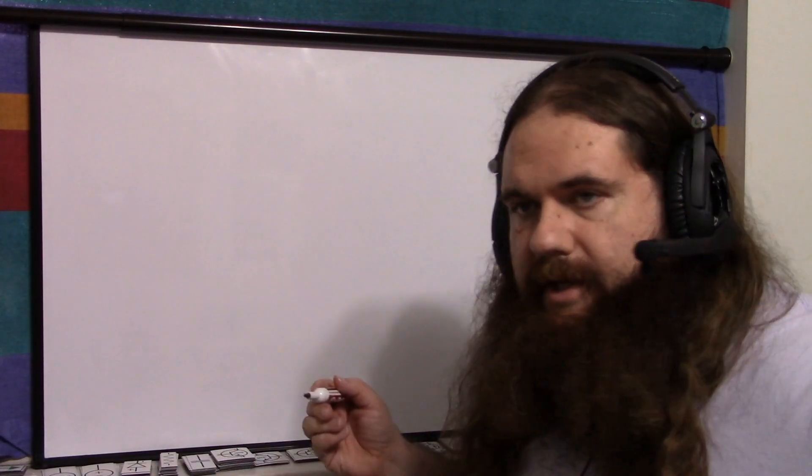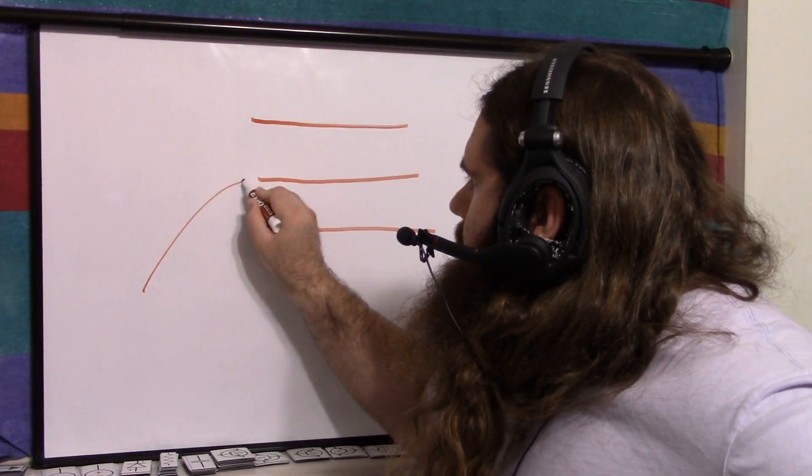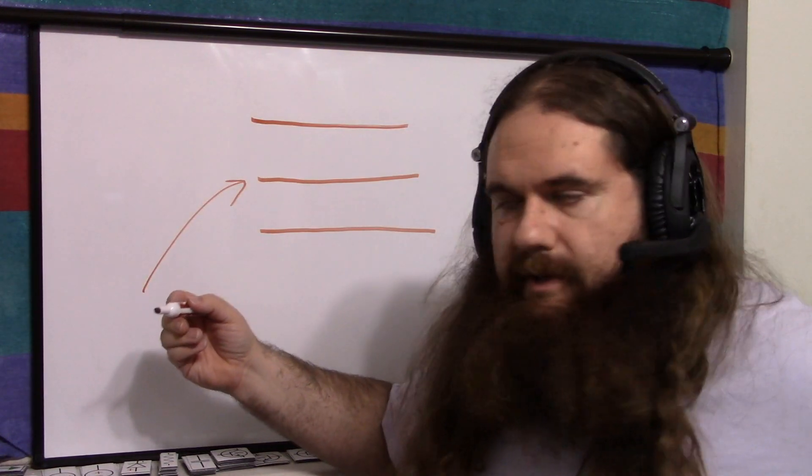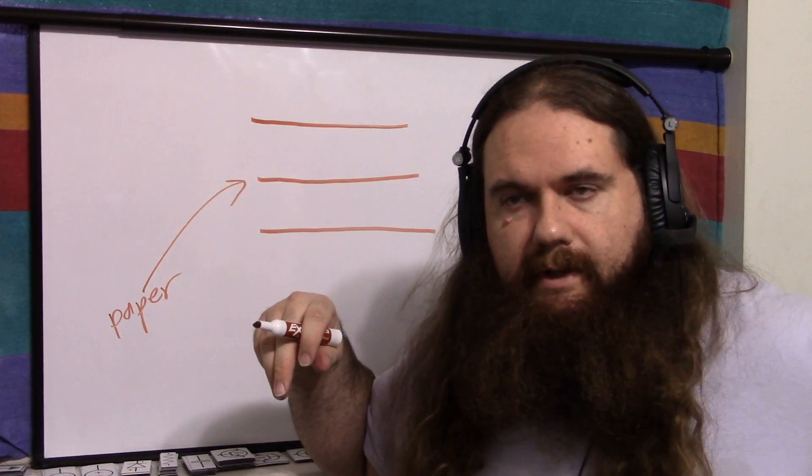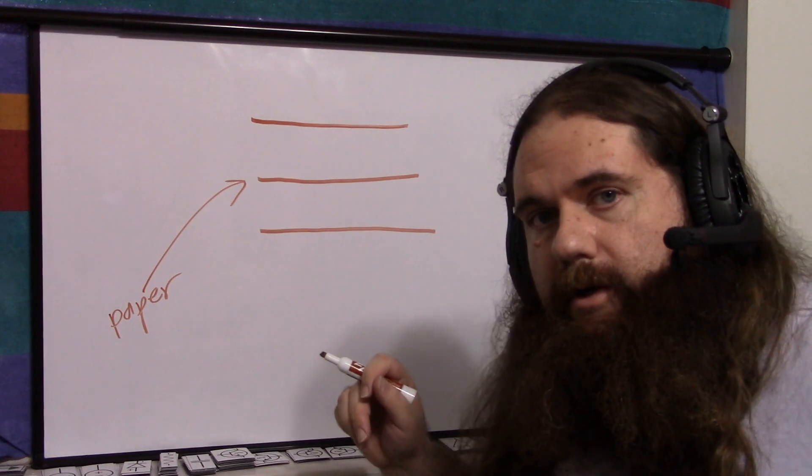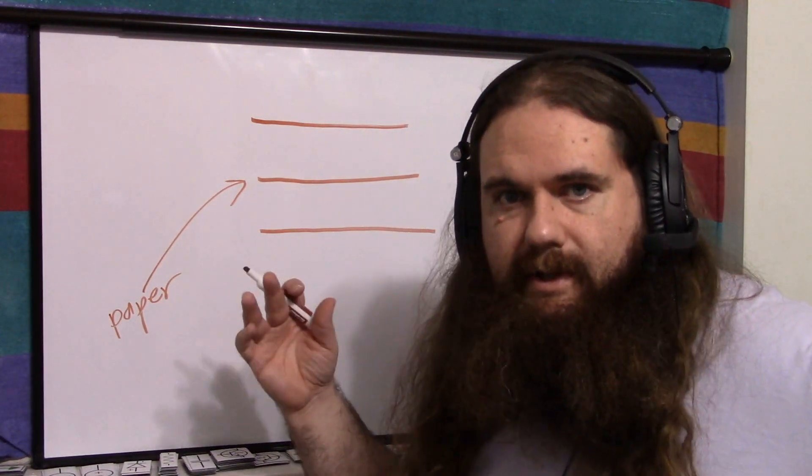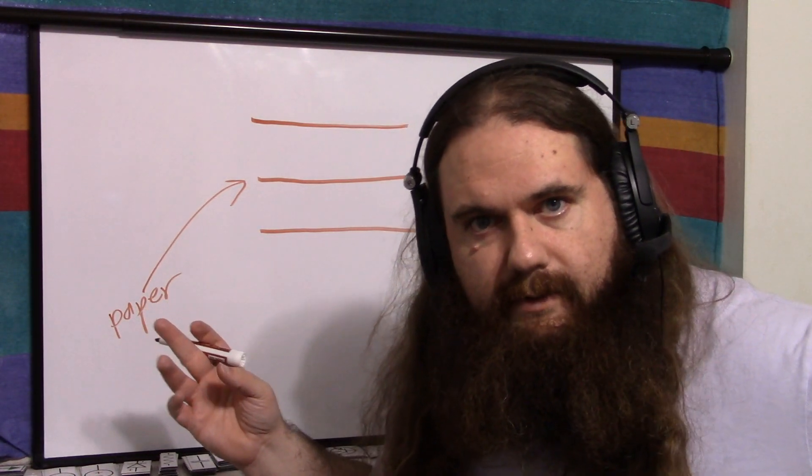Something like an electrolytic capacitor uses fancy chemistry to create its own dielectric on the fly, which is why it's got weird properties and it's polarized. We're just going to make the simple one. A basic homemade capacitor is three layers. In the middle, you've got whatever happens to be available. In my case, paper.